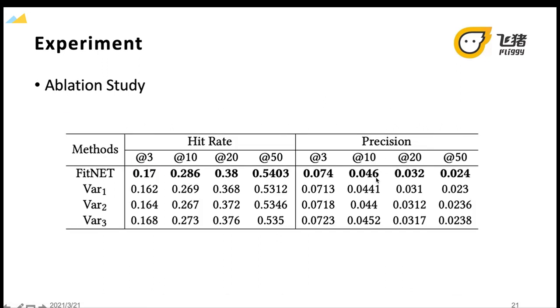To evaluate the effectiveness of the proposed three itinerary-aware attention mechanisms in the FitNet model, we conducted an ablation study by comparing FitNet with its three variants, named as VAR1, VAR2, and VAR3. VAR1 removes the first attention module, VAR2 removes the second attention module, VAR3 removes the third attention module. Experimental results of the ablation study are listed in this table, and more detailed analysis can be seen in this paper.